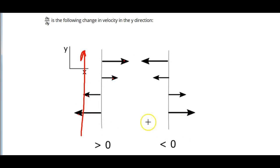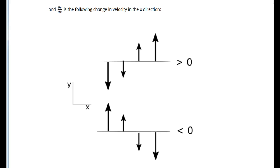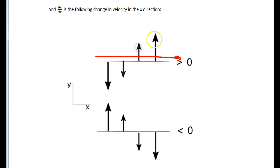Using the same logic on the right, we see that the change in u with respect to y is always negative. And because the change in y is positive, the partial derivative is negative, or less than zero. The same logic applies to the partial derivative of v with respect to x. To the right is positive for x, so you can determine how v changes as x becomes more positive, and see whether the partial derivative is positive or negative.